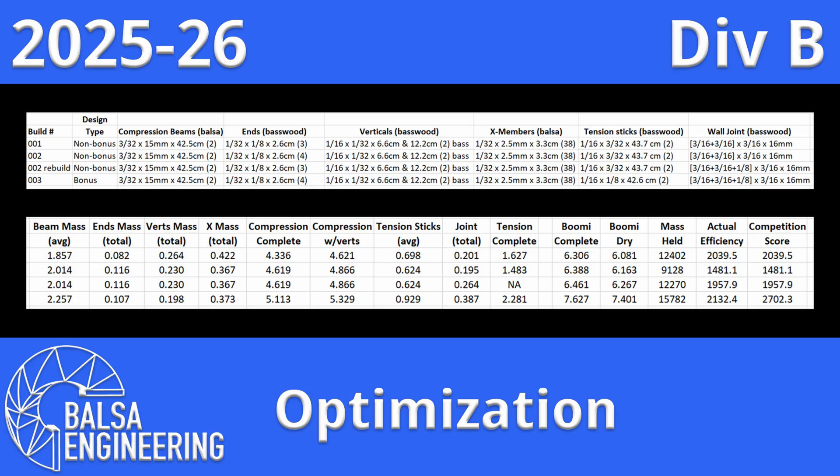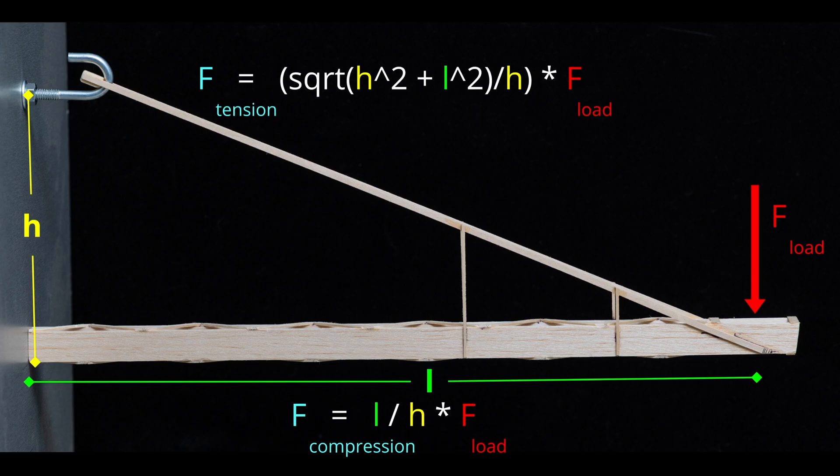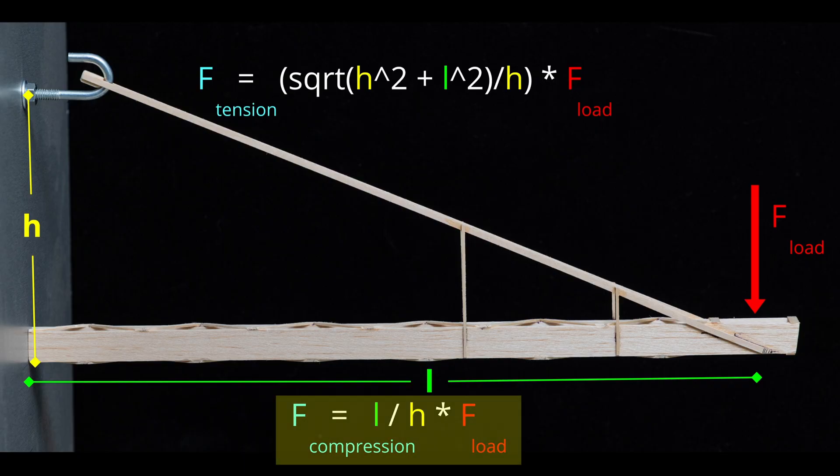The first decision you need to make is if you are going to attempt the bonus or not. That single decision affects everything as it drastically changes the design and internal forces the boomy needs to withstand. You will remember this image where I showed the formulas for the tension and compression forces as it relates to the applied load. For the purpose of deciding if it's worthwhile to attempt a bonus design or not, we can just use the simpler compression force formula, which is just the ratio of the length divided by the height times the applied vertical load (F = L/h * load).